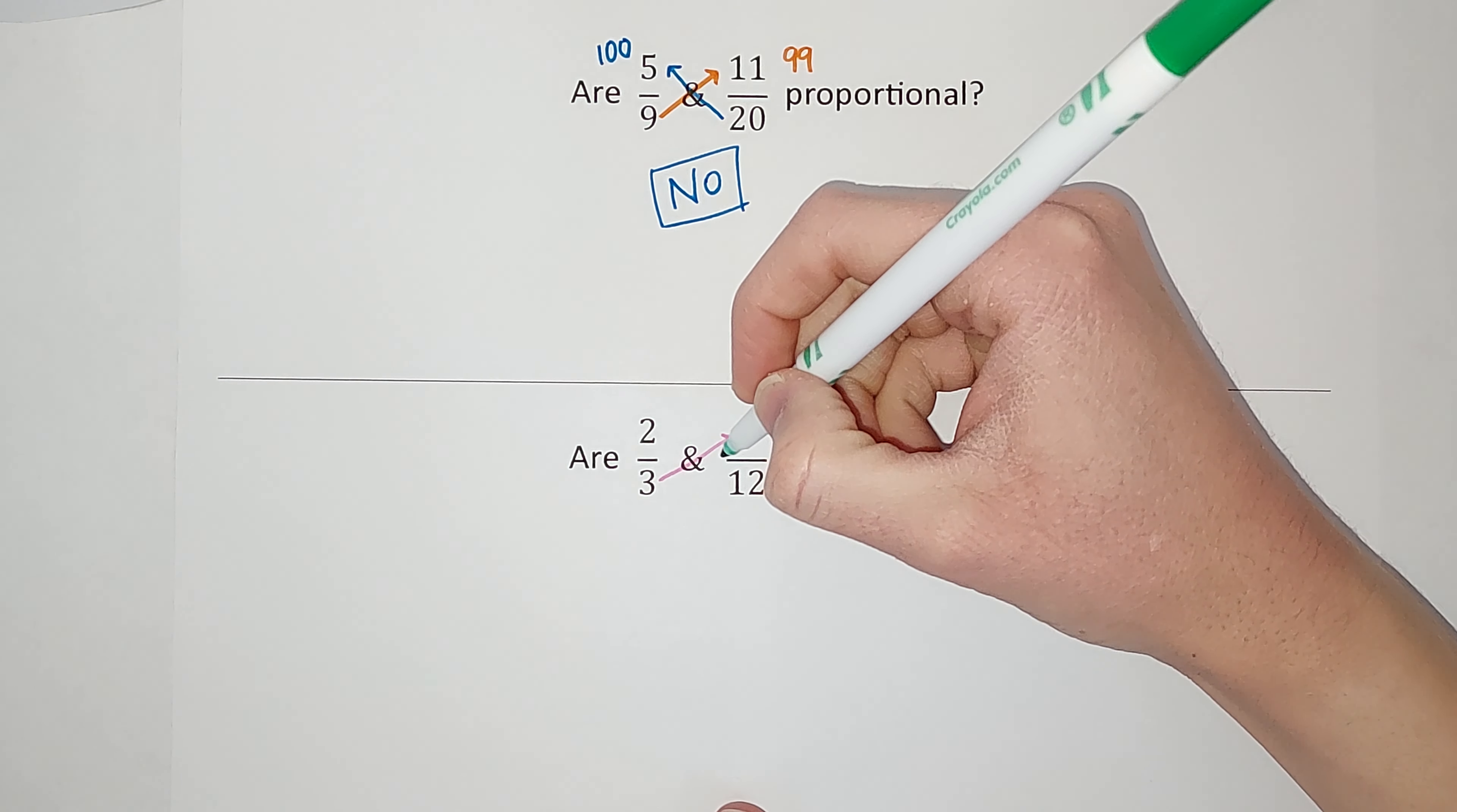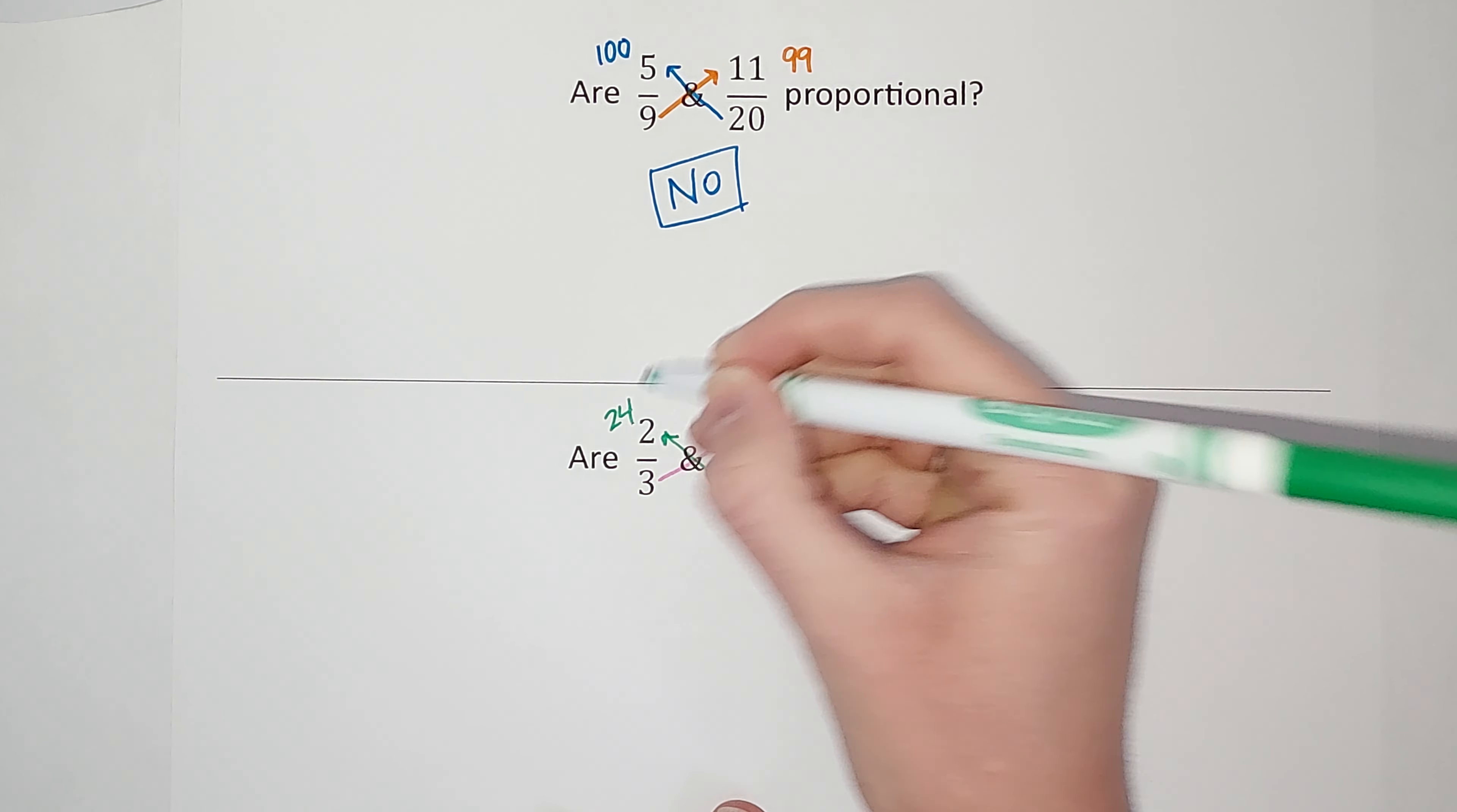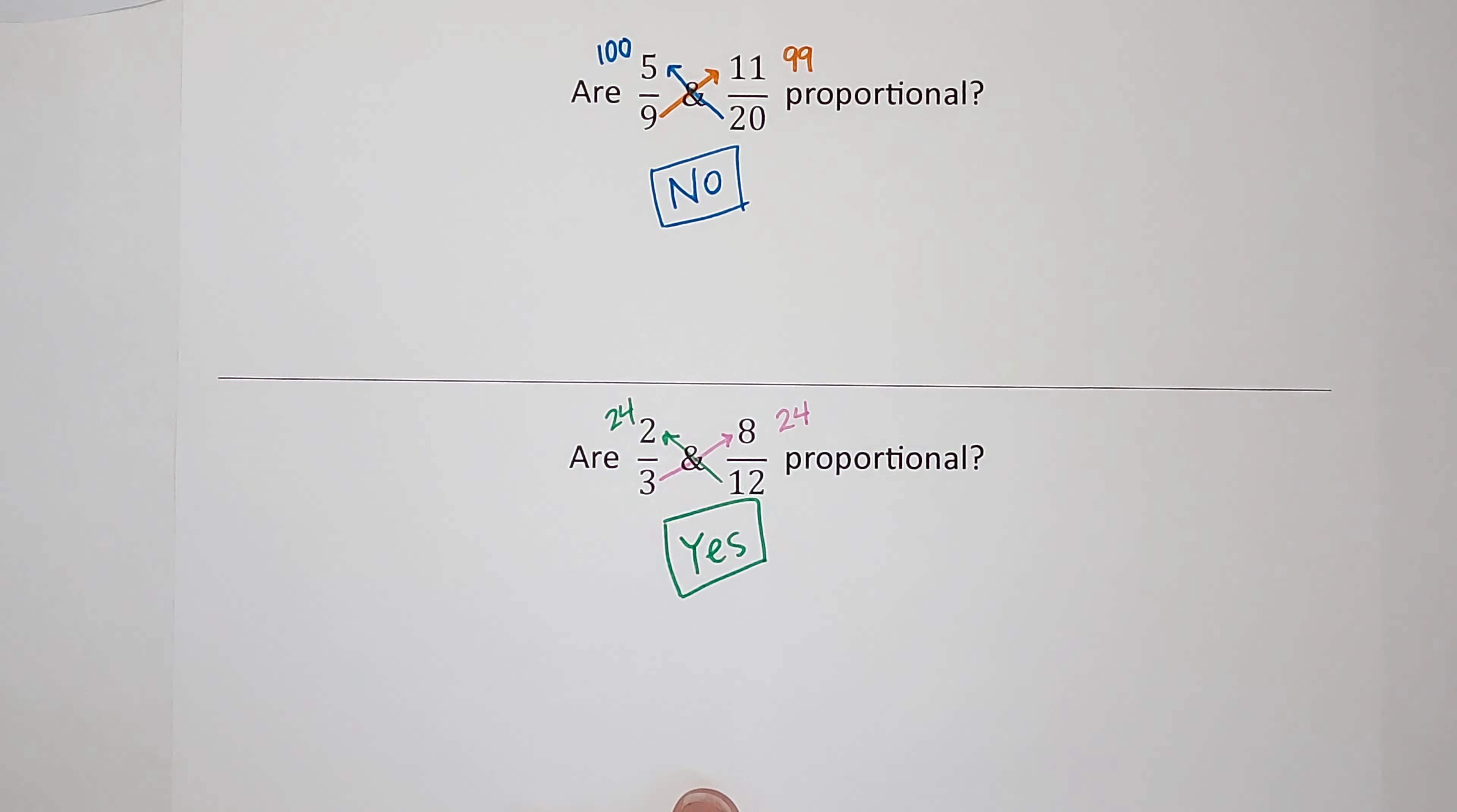8 times 3 is 24. 12 times 2 is 24. 24 and 24 are the same, so yes, 2/3 and 8/12 are proportional.